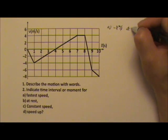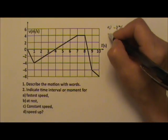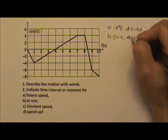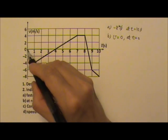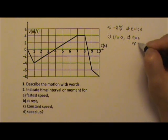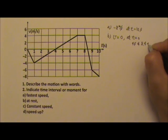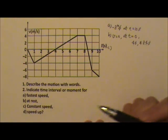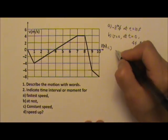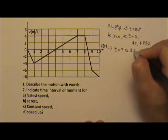At rest means velocity equals zero. The velocity is 0 at t equals 0, t equals 4, and t equals 8.4 seconds. For constant speed — that's when the velocity doesn't change — it is t equals 7 to 8 seconds.